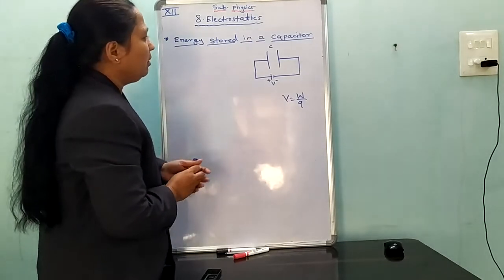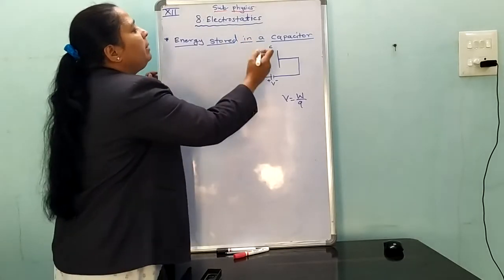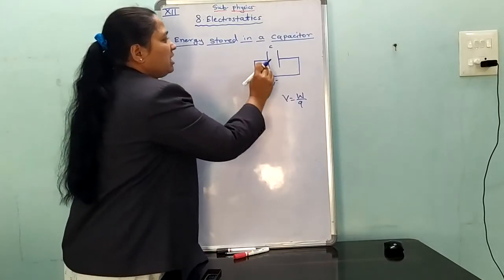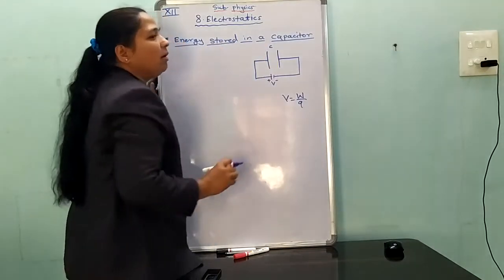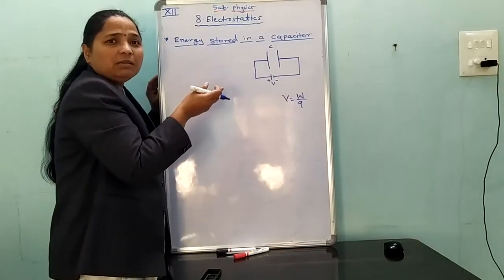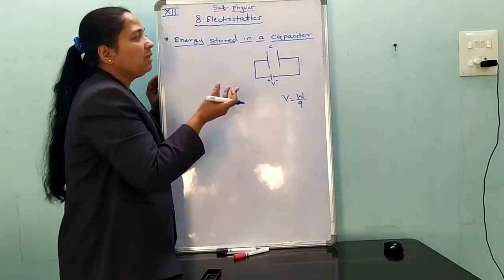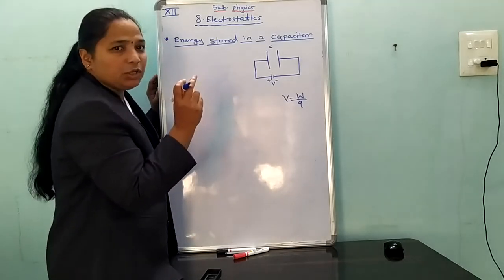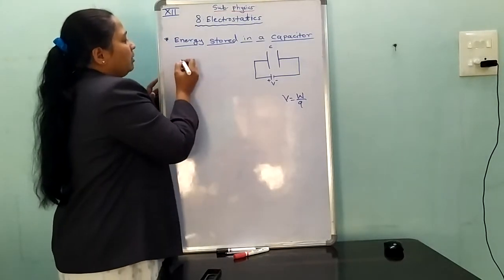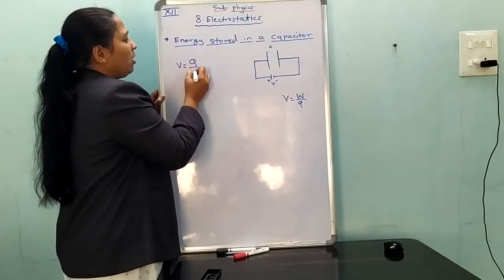When charging a capacitor, electrons are transferred from one plate to another plate. During the motion of electrons, work is done. At the intermediate stage of charging, the voltage is given by V is equal to Q upon C.